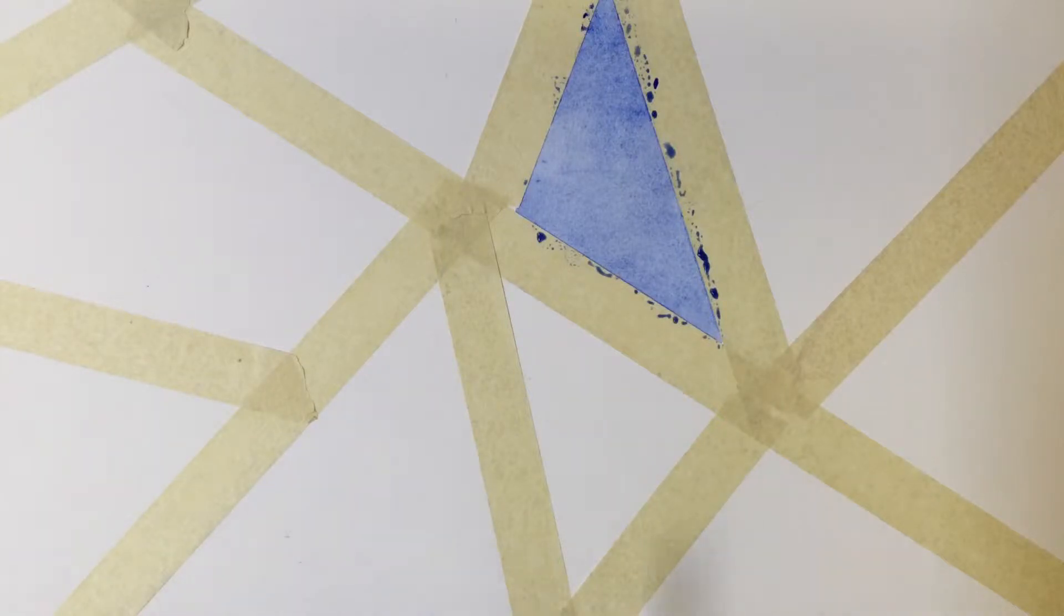For this next section, I'm going to do the graded wash. This basically means you're trying to create a gradient with your color, going from really saturated color to more translucent.